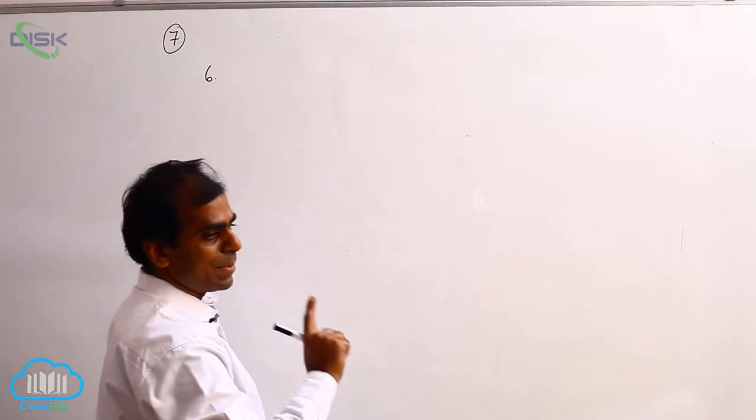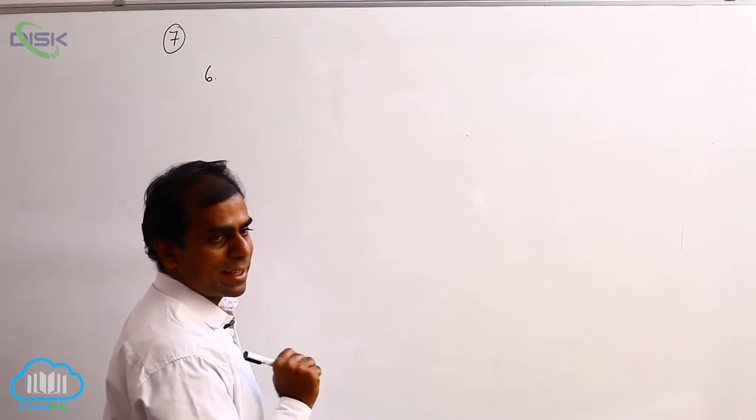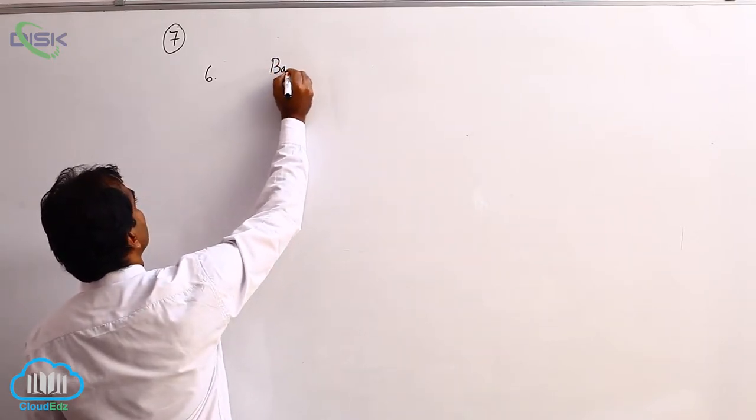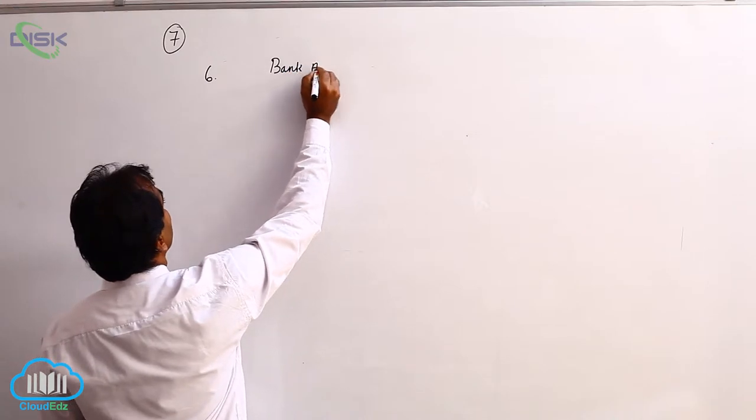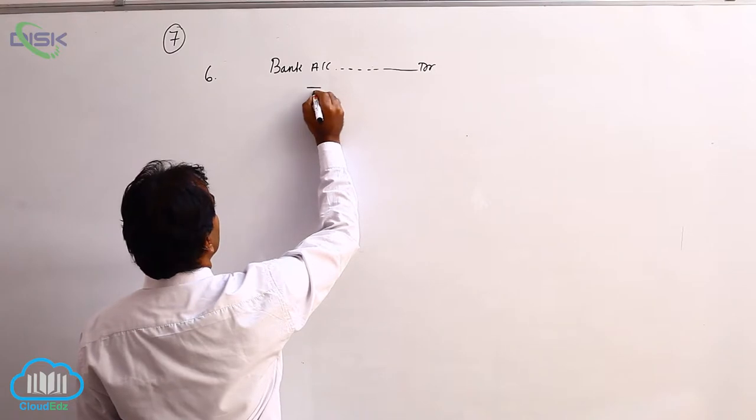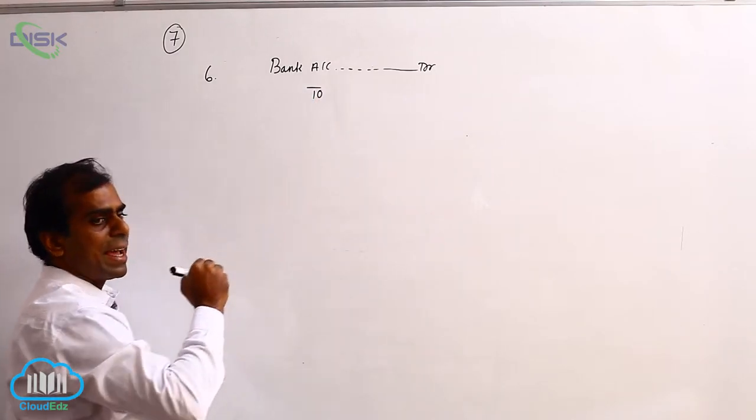What is the rule of a personal account? Debit the receiver. In this case, bank is the receiver, so we debit the bank. We write bank account debit. What you are depositing into bank is cash.